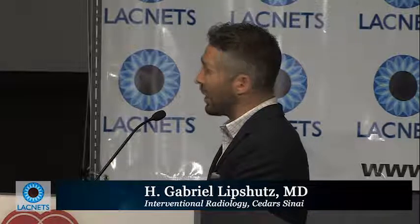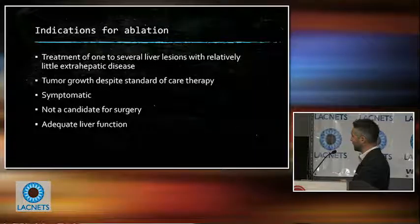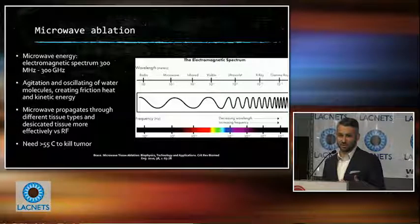I'm going to start by talking about ablation. We have multiple types: microwave ablation is the most common that we use here. Sometimes, depending on the scenario, we may use RFA. Cryoablation we don't use very often in the liver, but we use in other areas. IRE is a newer technology, and alcohol we don't use much anymore. Indications for ablation are typically oligometastatic disease — just a few lesions in the liver — patients with tumor growth despite therapy who are symptomatic, those not candidates for surgical resection, and patients with adequate liver function.